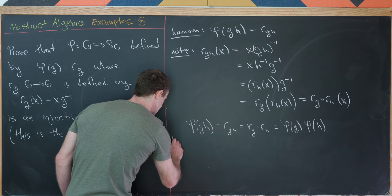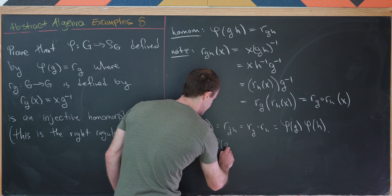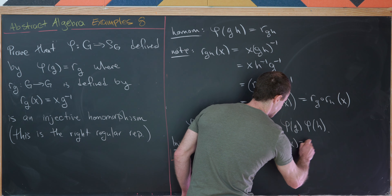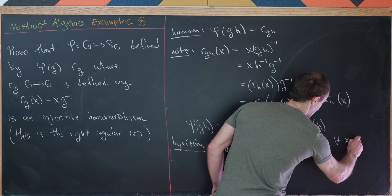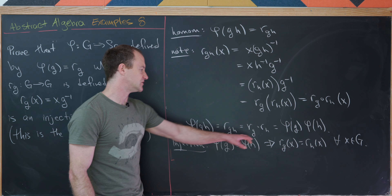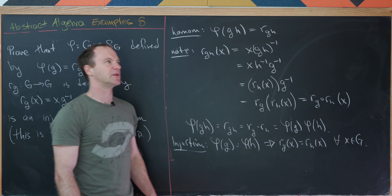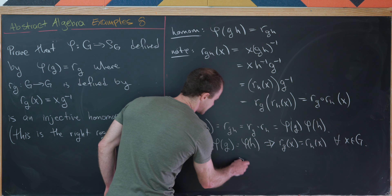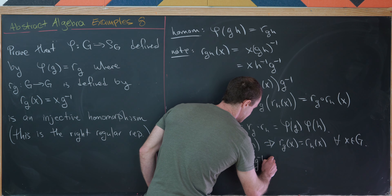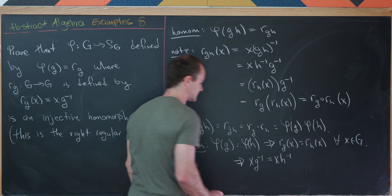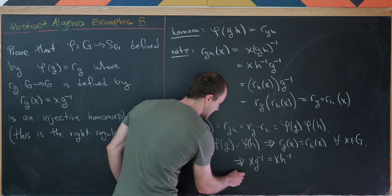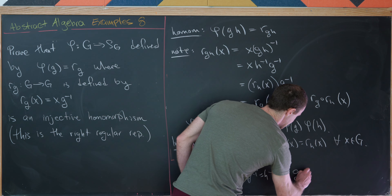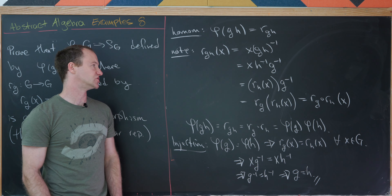Now let's show it's injective. Suppose φ(g) = φ(h), which means r_g(x) = r_h(x) for all x in G. These functions have formulas, so x·g⁻¹ = x·h⁻¹. By left cancellation, g⁻¹ = h⁻¹, and inverting both sides gives g = h. That's exactly what we needed for this to be an injective homomorphism.